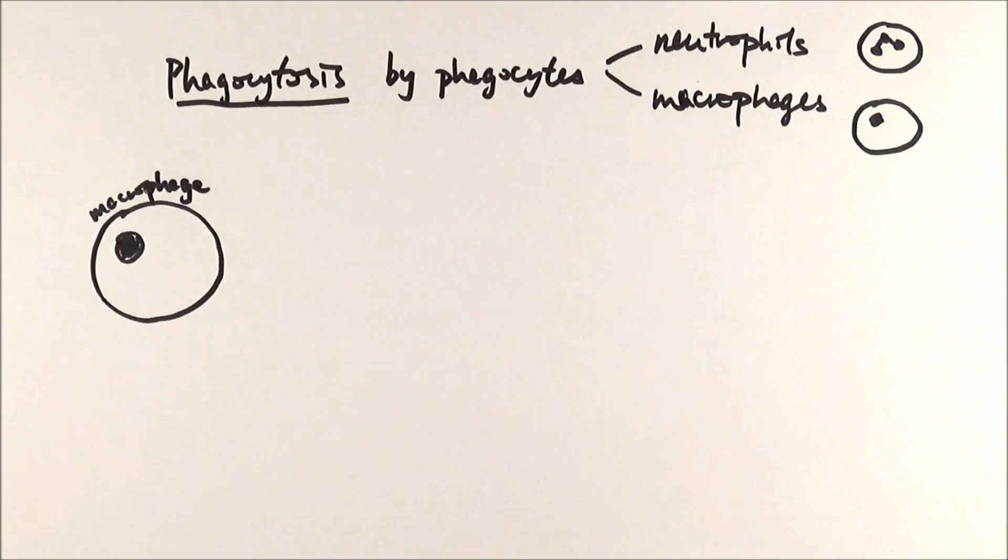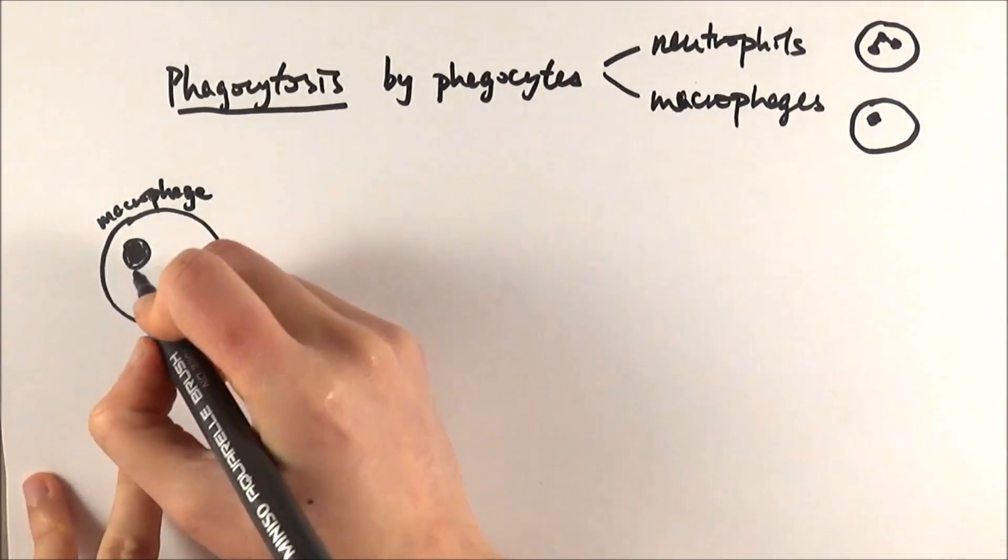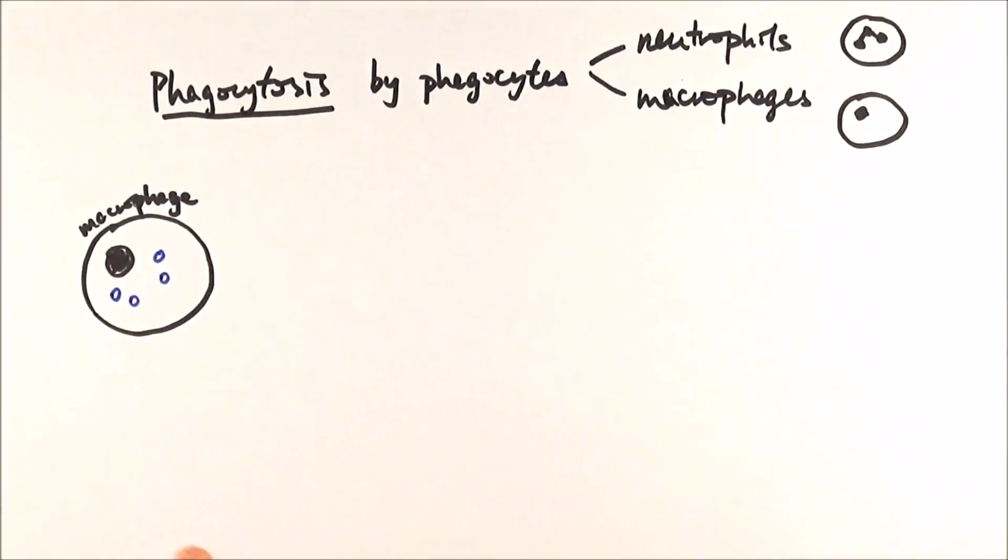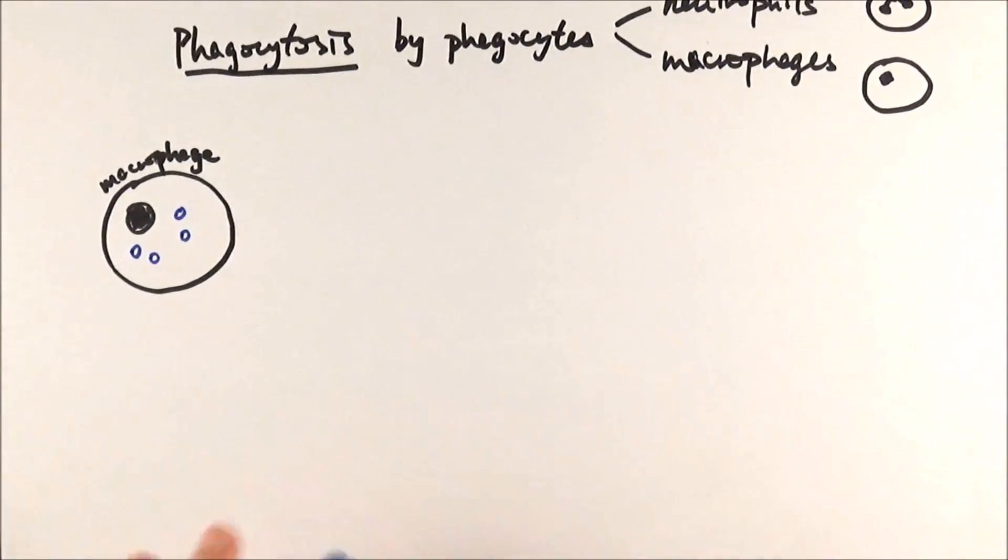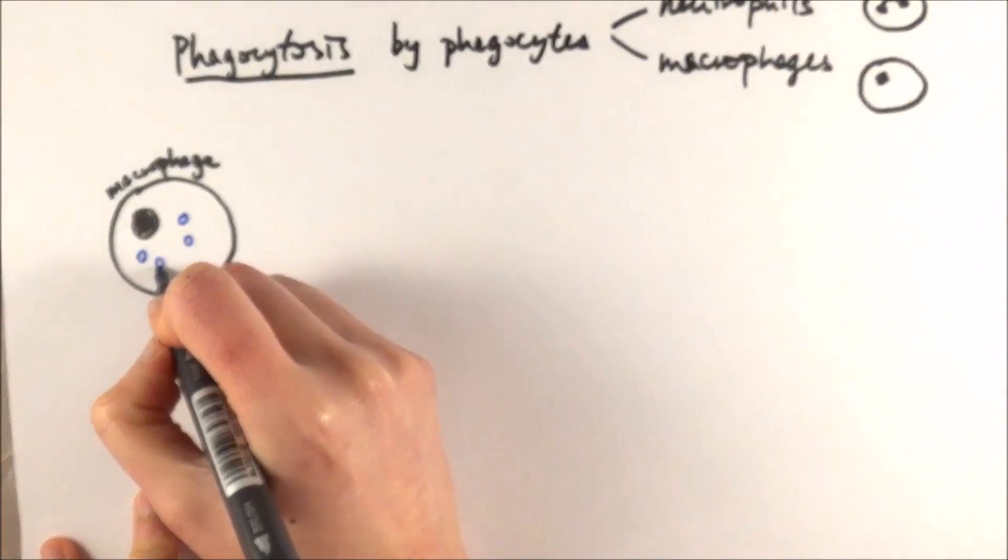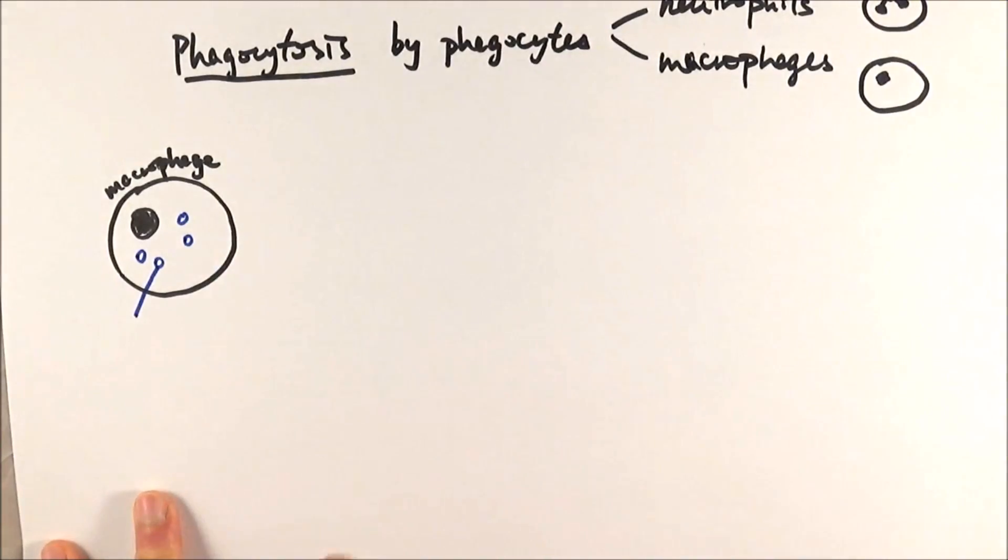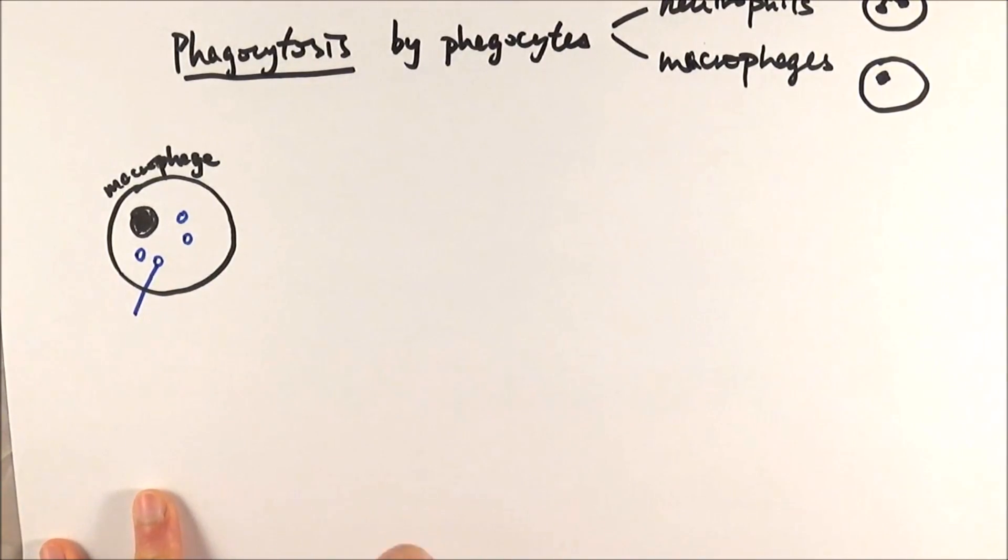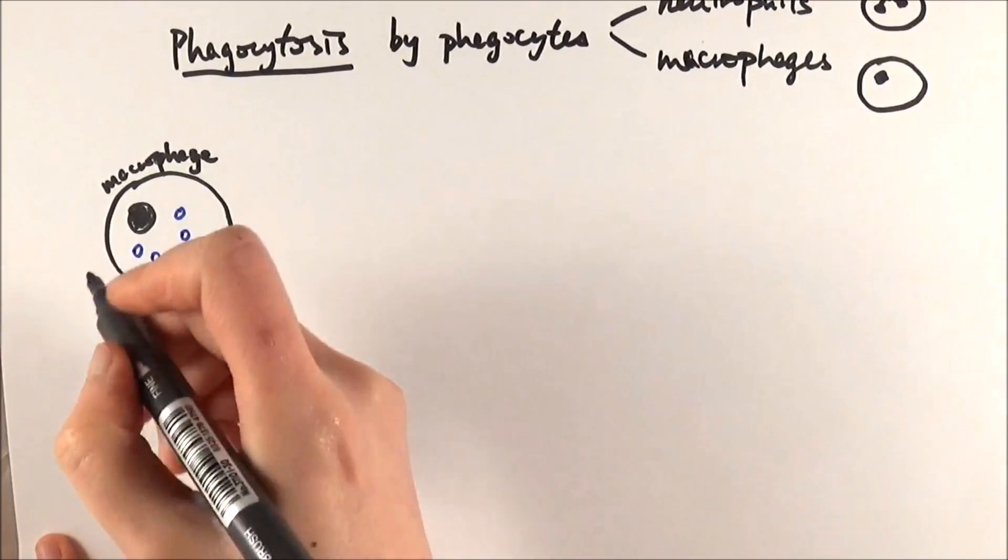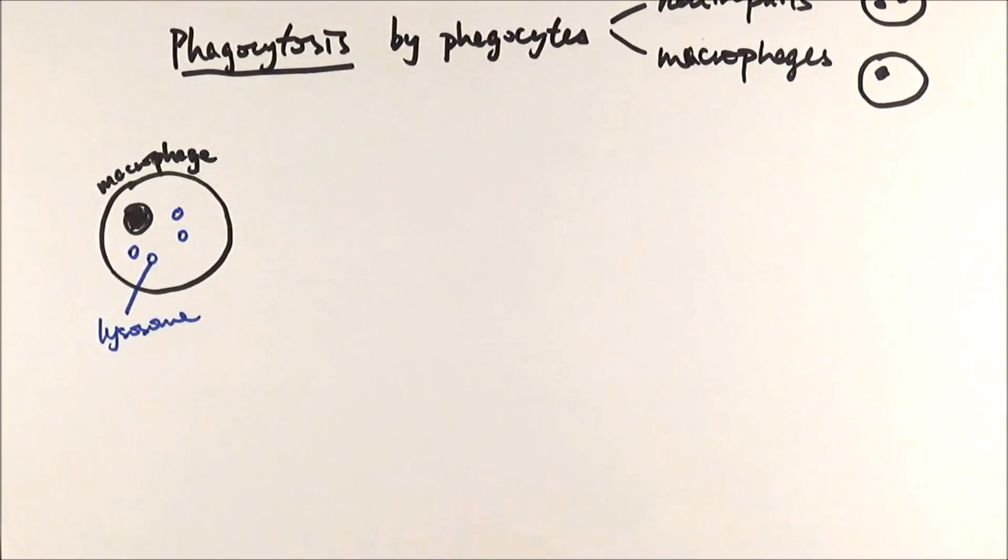Let's say in the beginning we have a macrophage with a circular nucleus, and also lots and lots of lysosomes. These lysosomes are basically vesicles that contain enzymes to digest biological molecules. So they contain things like protease, carbohydrases, lipases, and all that sort of stuff.